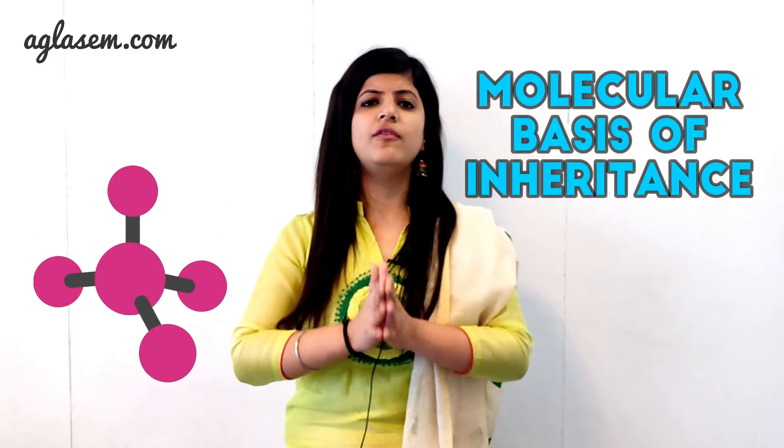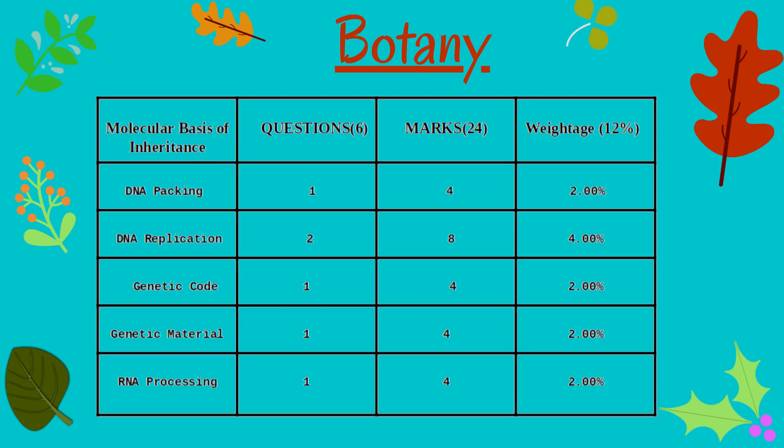The next unit is Molecular Basis of Inheritance, which carries around 24 marks weightage. The most important topic in this unit is DNA Replication, and other topics of equal weightage are shown on your screen. The unit has a total of 6 questions and marks weightage of 24. Topics include: DNA Packing (1 question, 4 marks), DNA Replication (2 questions, 8 marks), Genetic Code (1 question, 4 marks), Genetic Material (1 question, 4 marks), and RNA Processing (1 question, 4 marks).